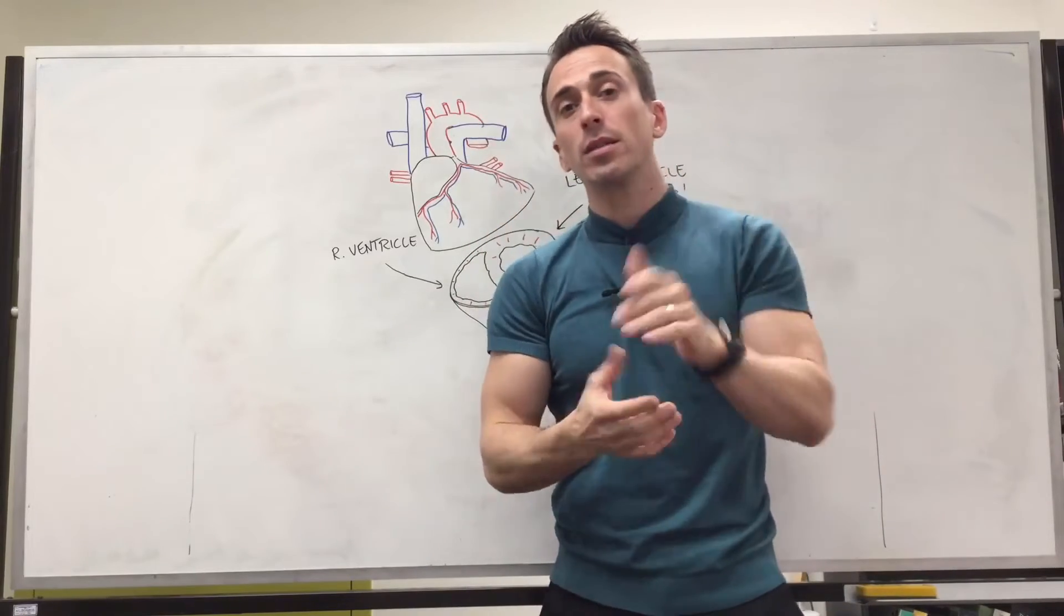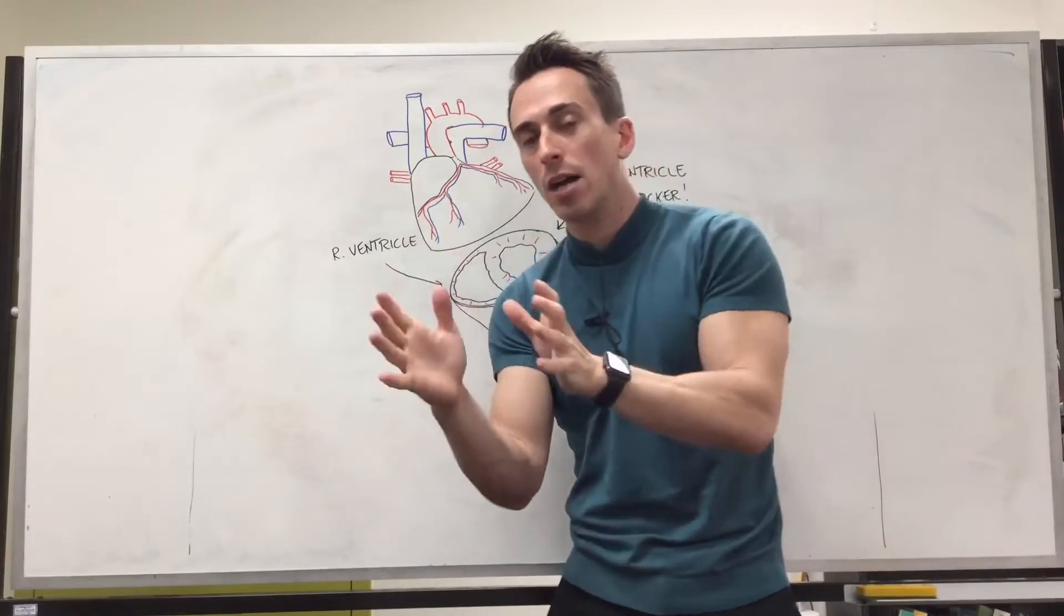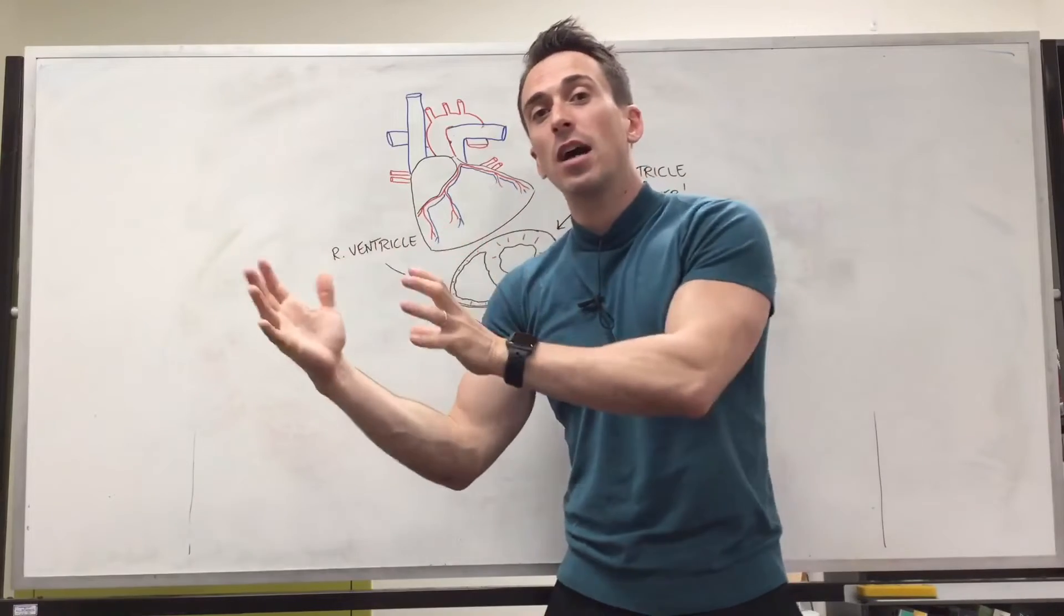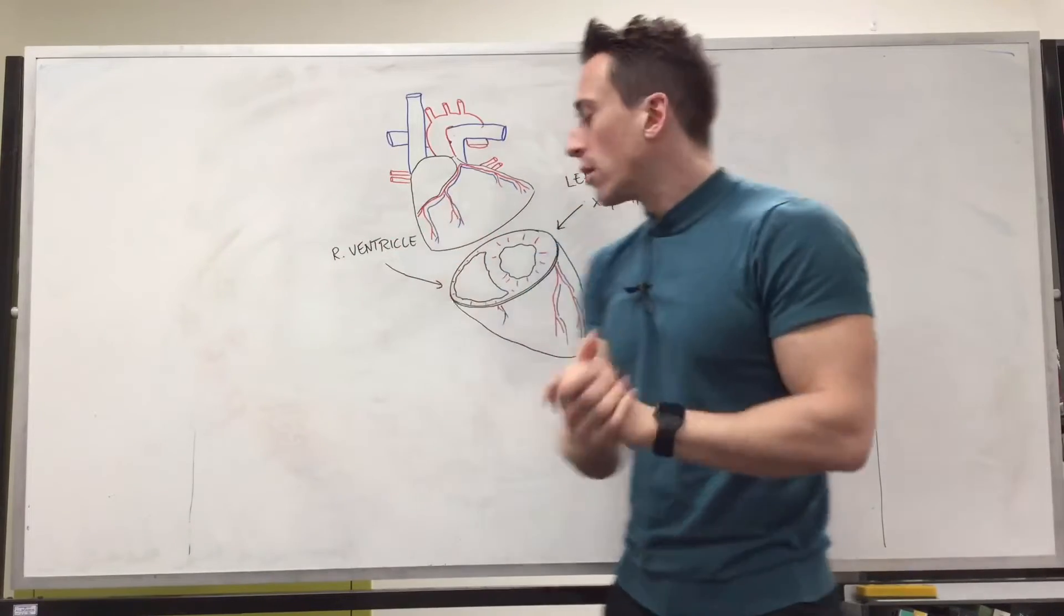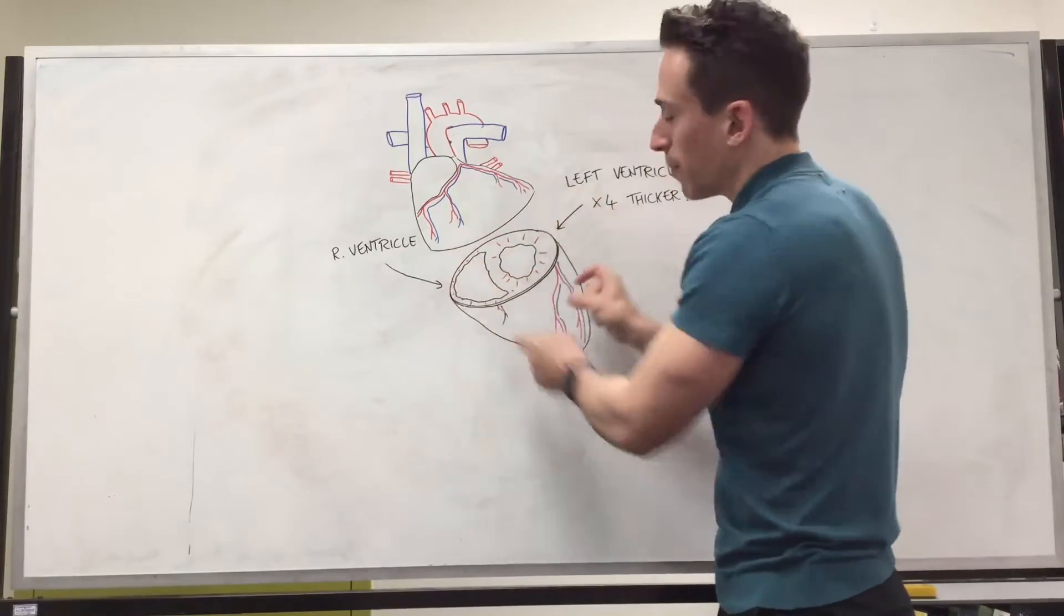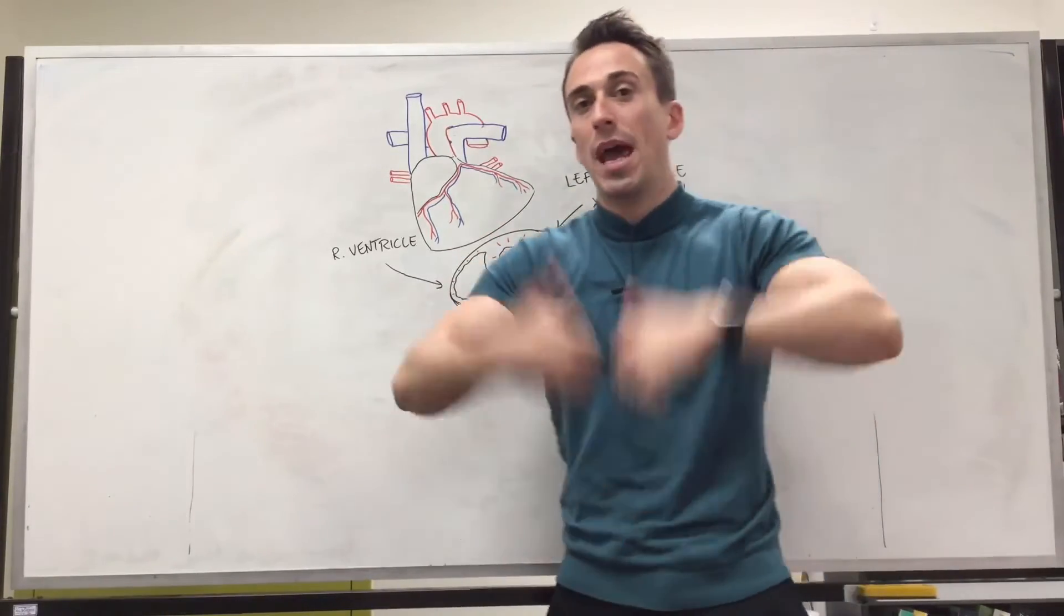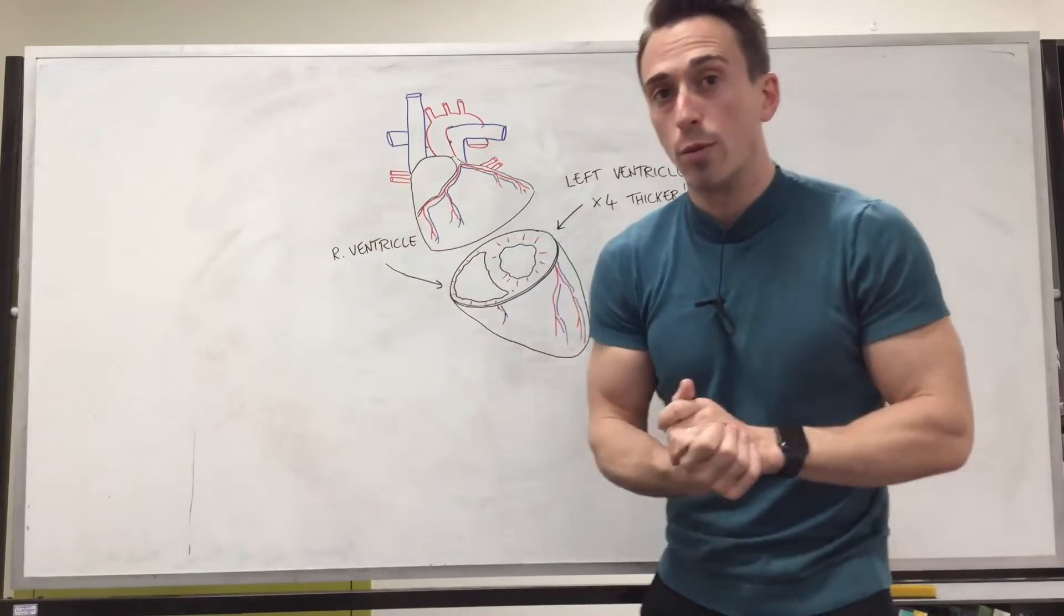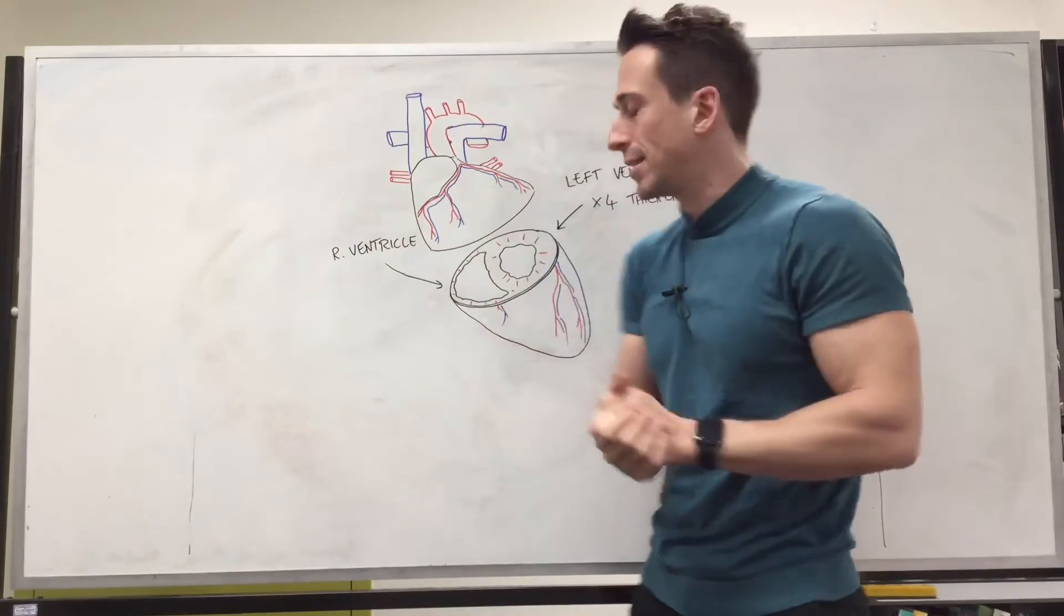This is important clinically because if somebody has a myocardial heart muscle infarction, death, that results in death of the myocardium. And it can happen anywhere throughout this myocardium. Predominantly happens at the ventricles because they push blood out to the body, so we get the most noticeable effects there.